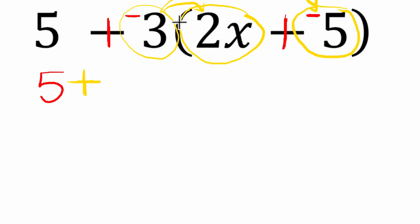So negative 3 times 2x is negative 6x, and then plus negative 3 times negative 5 is positive 15, or plus 15. This helps me keep track of the fact that really distributing that negative 3 will reverse the signs of the two terms inside the parentheses.